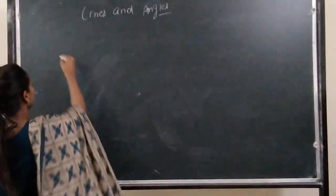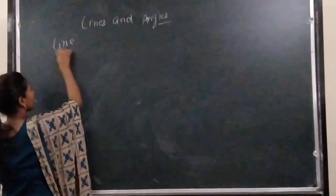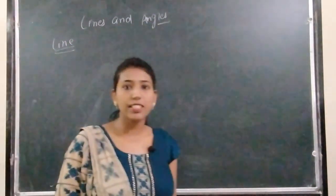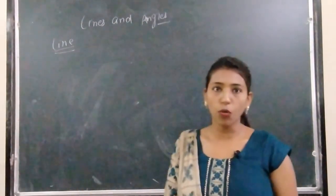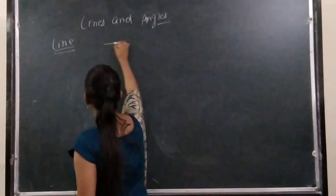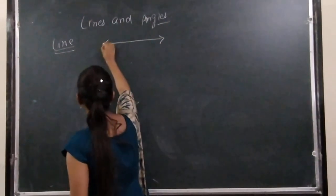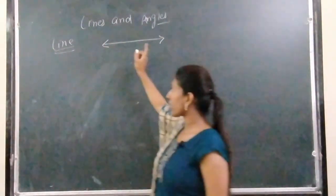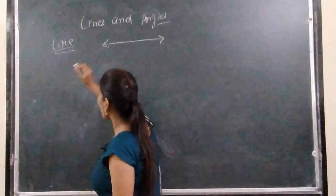First comes line. So what is a line? A line is a straight figure having no endpoints and it can be extended from both sides. You can extend from one side or from the other side also.